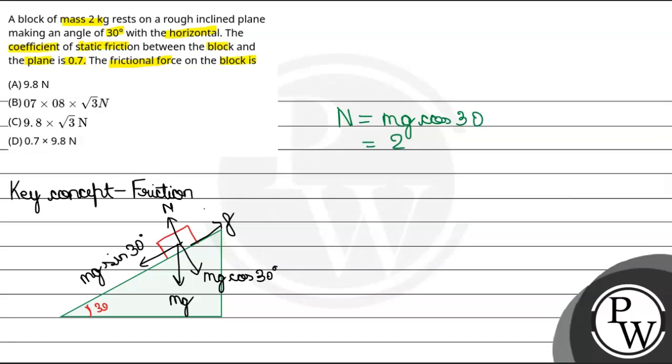So the normal force N equals m g cos 30, which is 2 kg into g, g's value is 9.8, into cos theta, which is root 3 by 2. So this value we calculate here, we get 9.8 root 3 newtons.